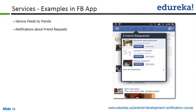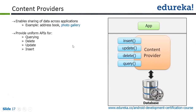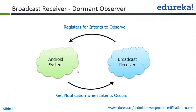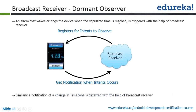For example, a service that keeps running in the background looking for news feeds, notifications, or friend requests — that's an unbound service. For content providers, my app interacts with the content provider, which ultimately interacts with the database, performing operations like reading, deletion, insertion, and updating. For broadcast receivers, I need to register my intents to observe for a broadcast. As soon as the observer gets the observance done, it gets a notification when the intent occurs. An alarm that rings the device when a stipulated time is reached is triggered with the help of a broadcast receiver.